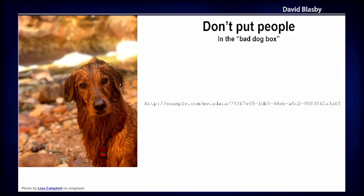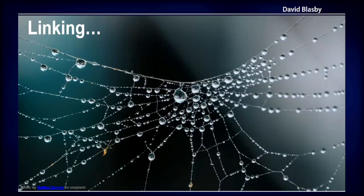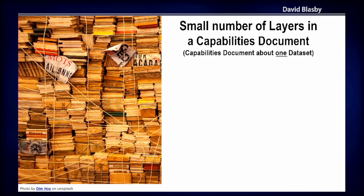Finally, let's talk about linking data and metadata. Some capabilities documents are hilarious — they have ten to fifteen thousand layers in them. By hilarious I mean totally not funny; it's just too many, it takes a long time to process and a lot of links to follow. I recommend having a capabilities document for just a single dataset — that keeps things really obvious and solves a bunch of other problems. In something like GeoServer, just break up your layers into workspaces — one workspace per dataset — and you can link to a workspace-specific capabilities. One dataset, one capabilities file.